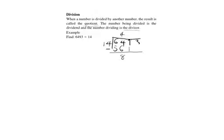Then we drop 9. We have 89. And we have to know how many times 14 goes into 89. And the closest is 6, which gives us 84. So when we subtract, we will have 5. Then we drop 3.